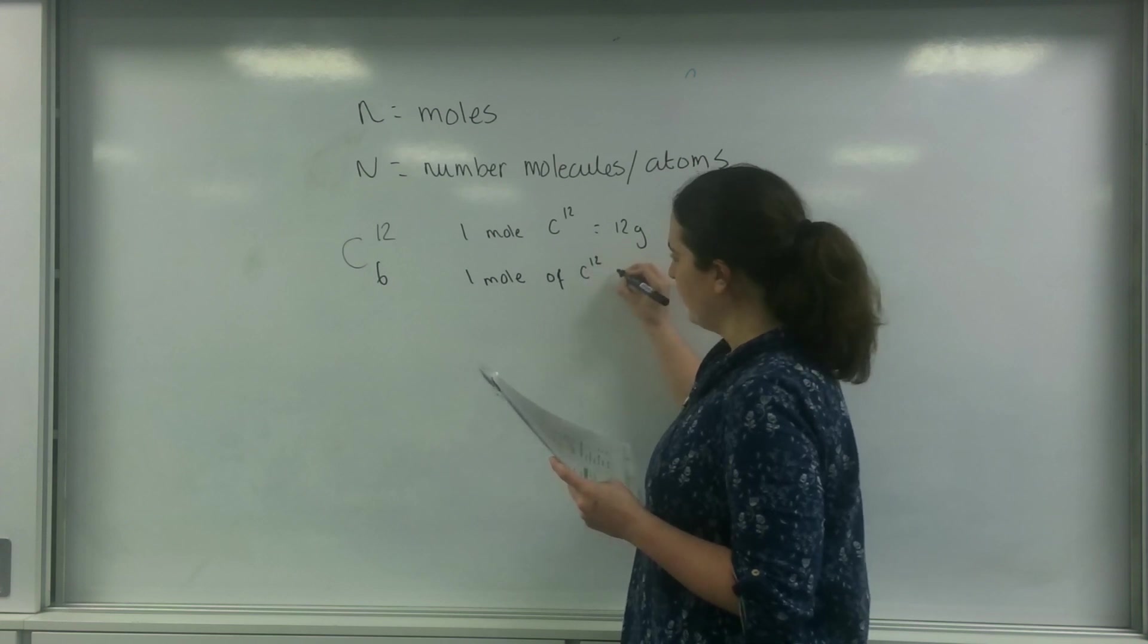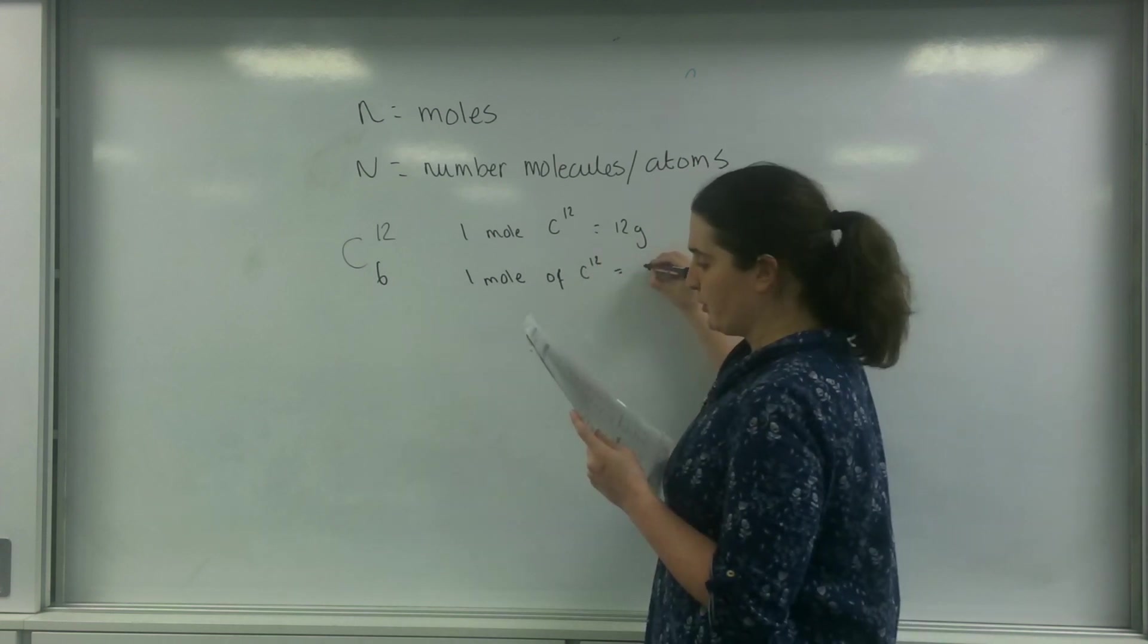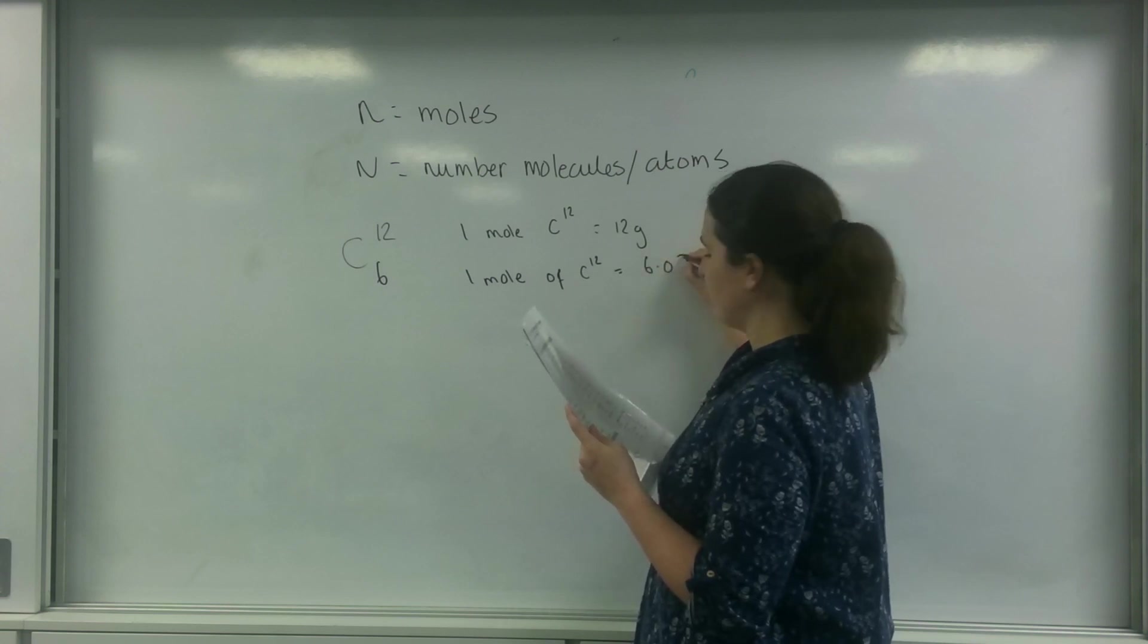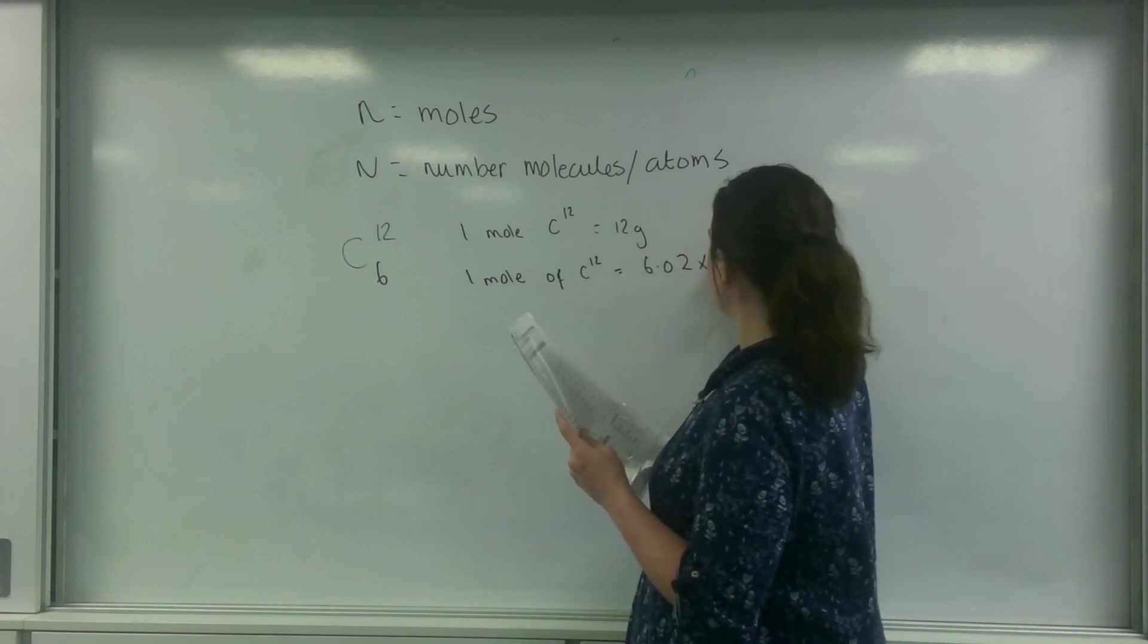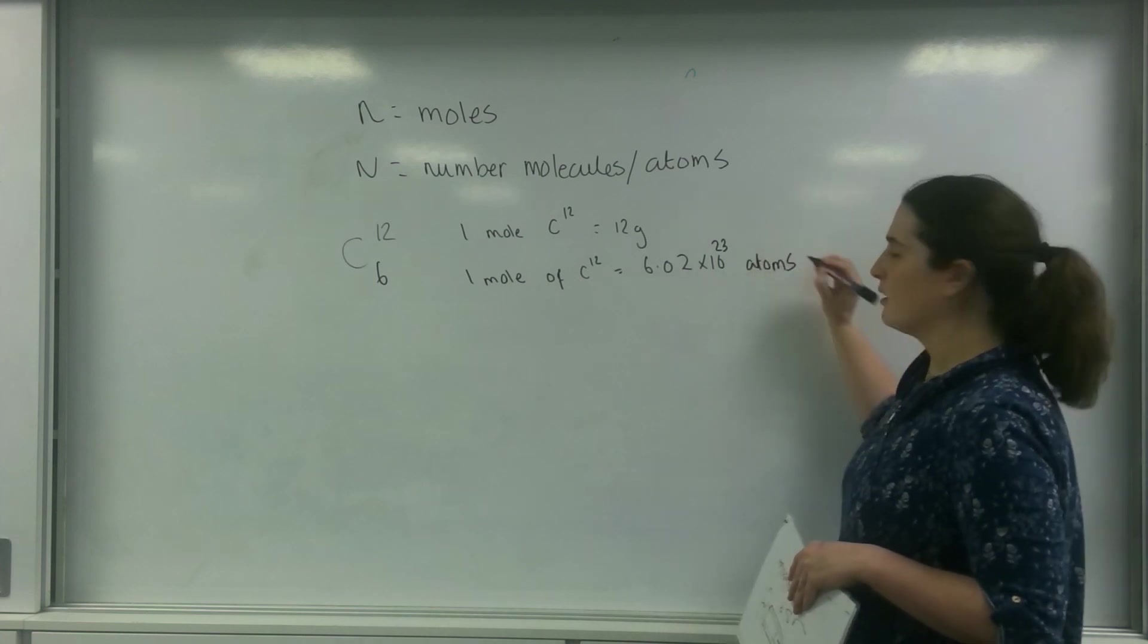Carbon 12. There is, where's Avogadro's constant? Avogadro's constant 6.02 times 10 to the 23 atoms.